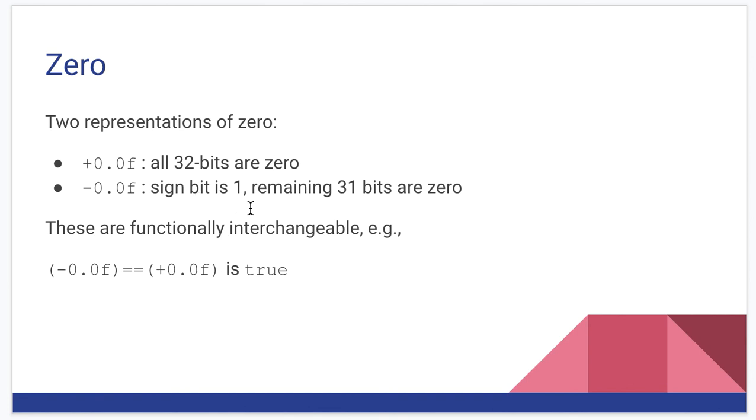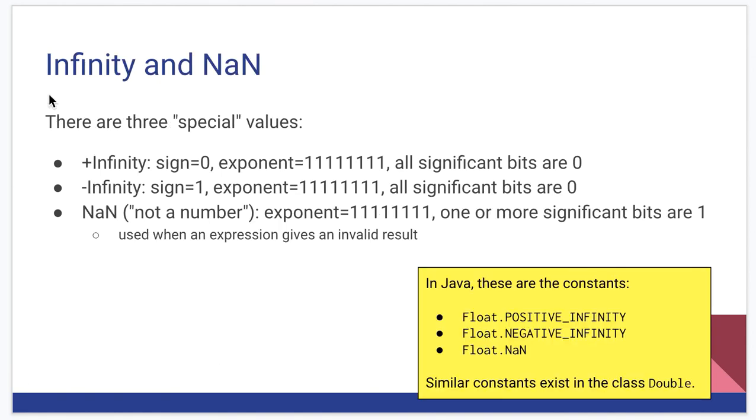Look at zero first. There are two representations of zero. And I'm doing these as the Java floating point representation for the constant. We actually have a positive zero and a negative zero. In positive zero, it's easy. All 32 bits are zero. Negative zero is the same except the sign bit. The most significant bit is one. Functionally interchangeable. Negative zero, double equal to positive zero evaluates to true in Java. So you can use them interchangeably and nothing happens. And that's true of whatever platform you're on.